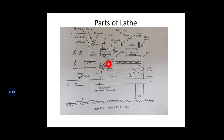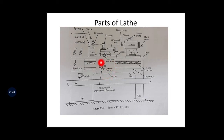The apron is fitted near the saddle facing the operator - it houses the gears, levers, hand wheels, and clutches that operate the carriage by hand or by automatic power feed. The lead screw is a long shaft with square threads cut on it. The rotation of the lead screw facilitates the movement of the carriage during thread cutting operations. Using the half-nut mechanism, you can unlock it and the carriage will move automatically in the forward or backward direction.